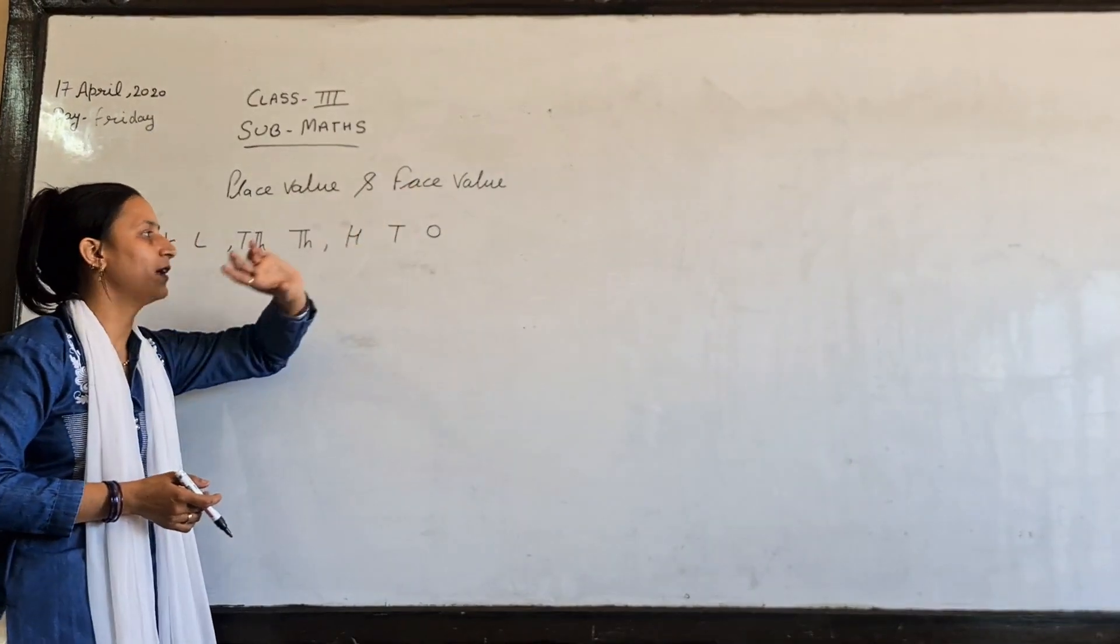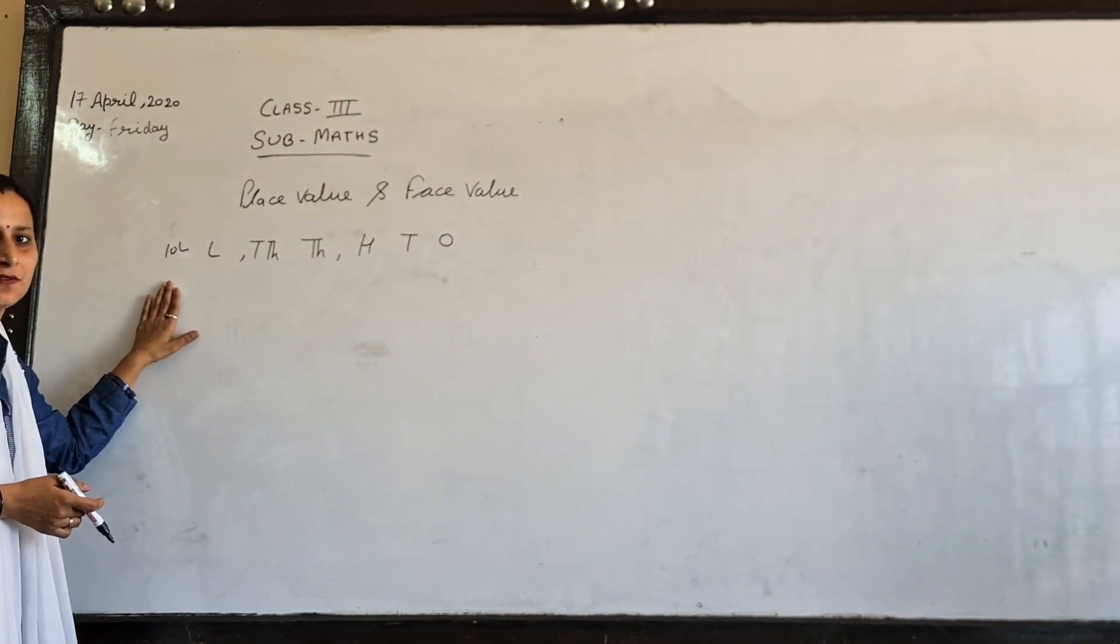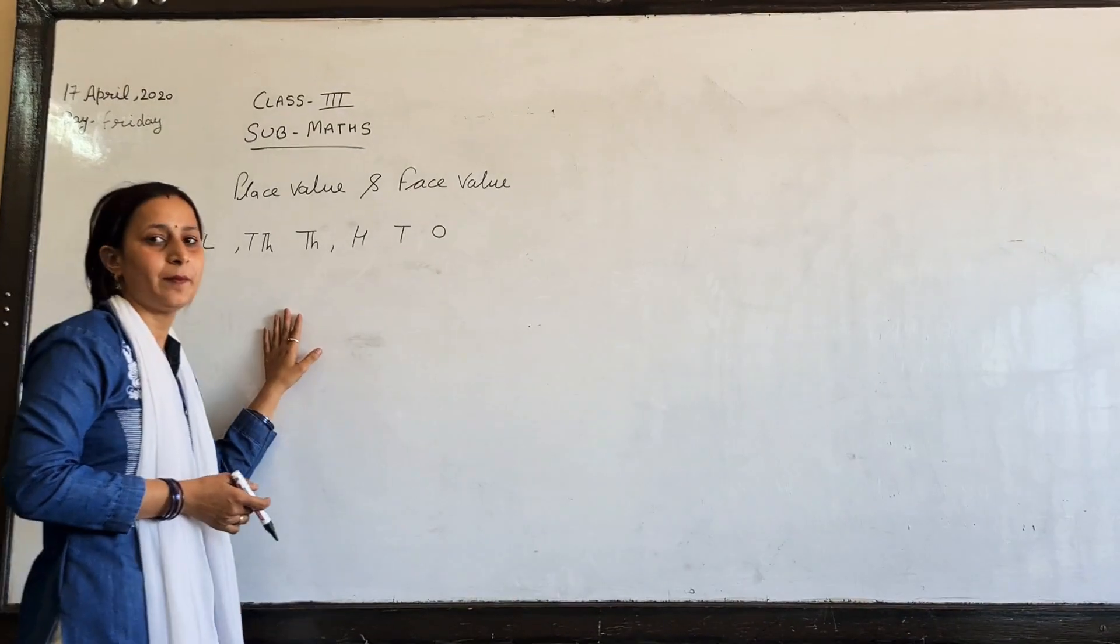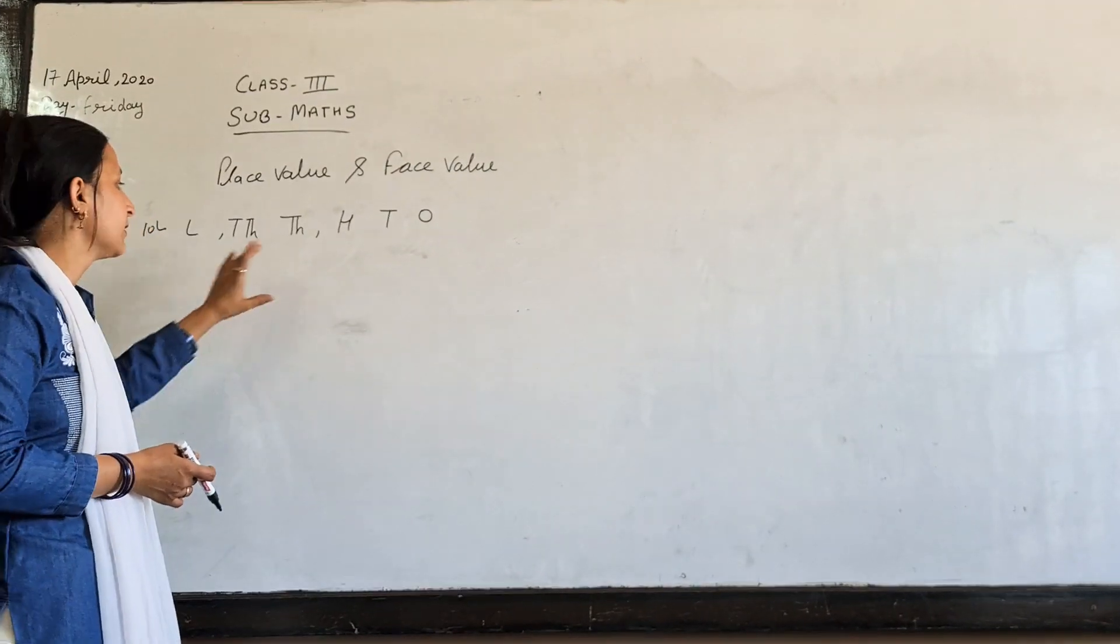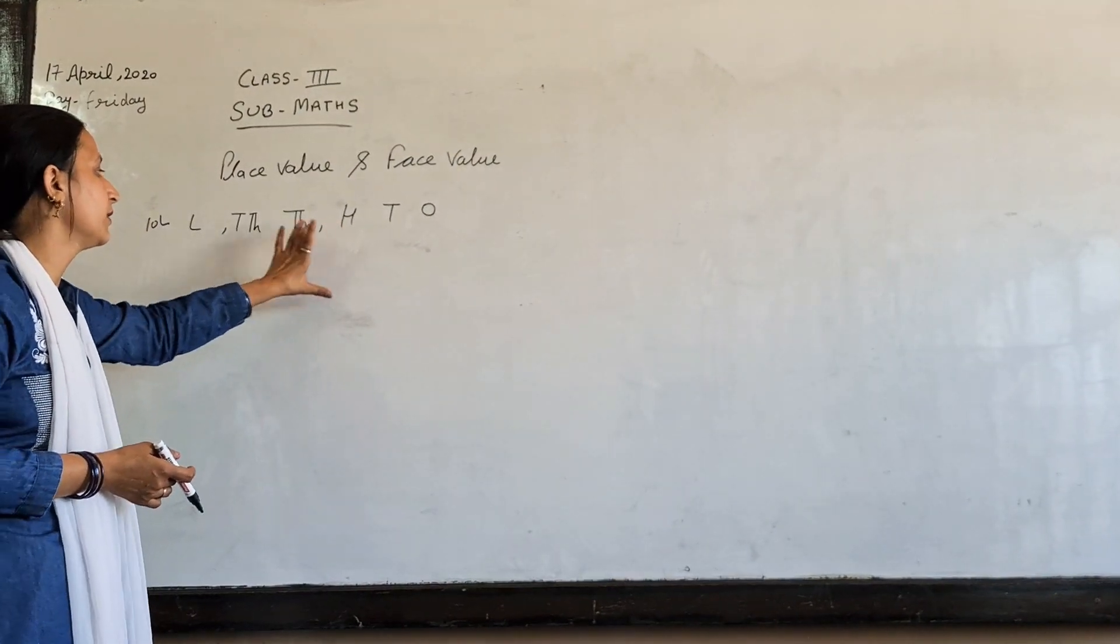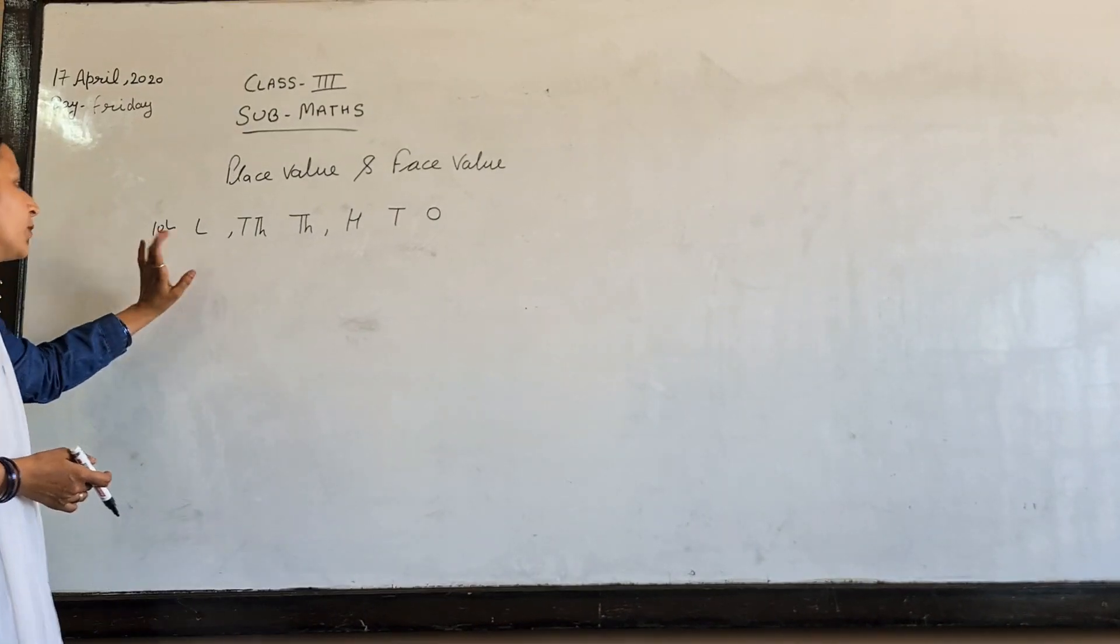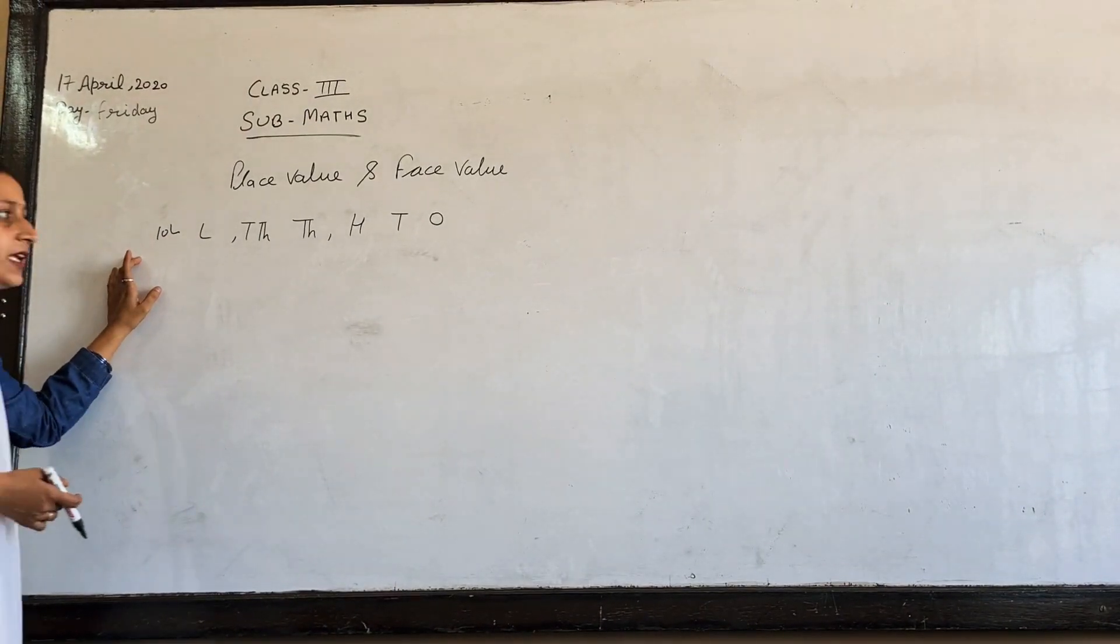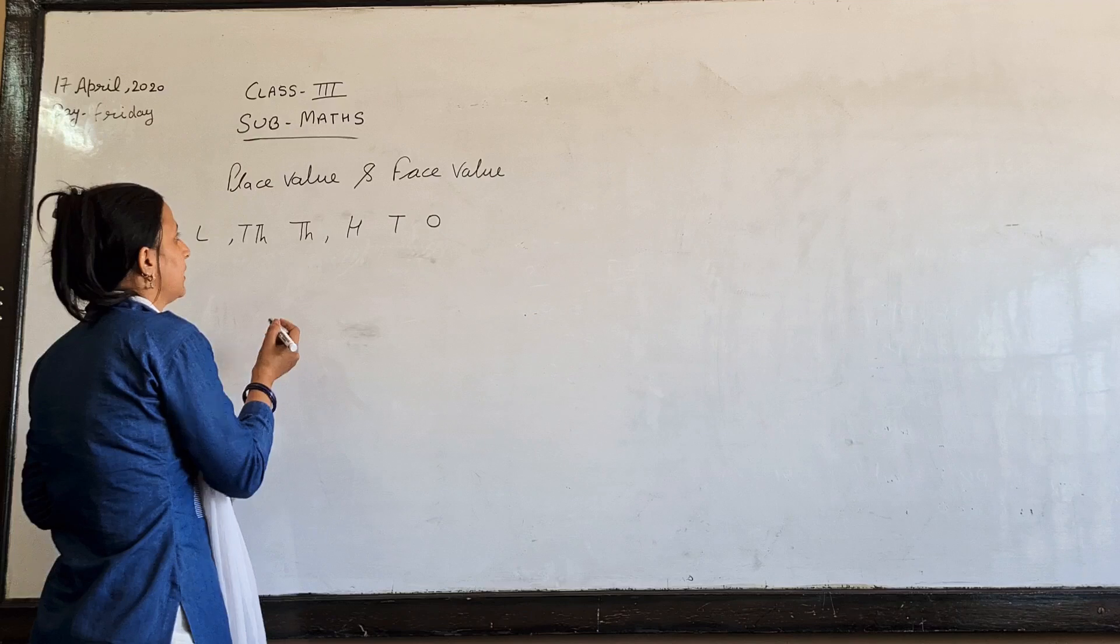This is your place value and place value. This is your place value chart in which you are entering. You will have 100,000 and 1,000, then you will have 10 like minutes, then you will have a place value.